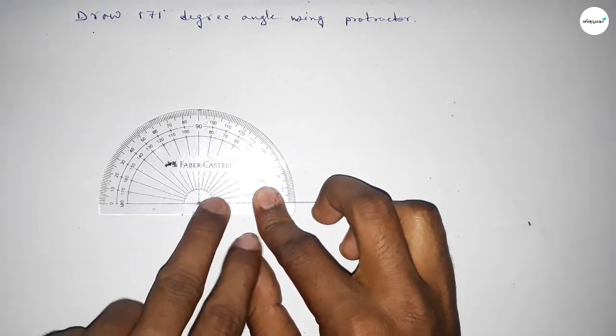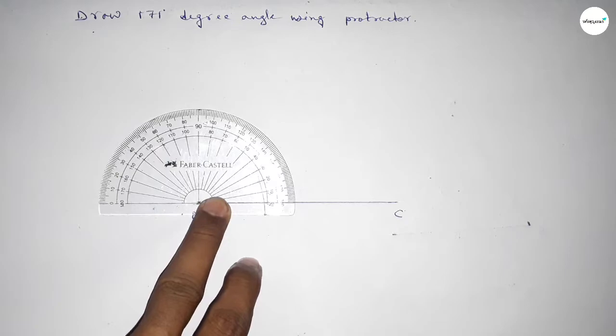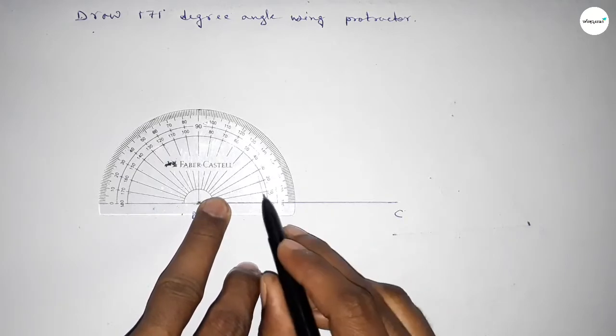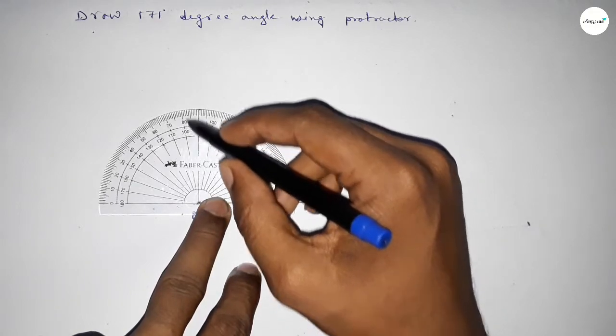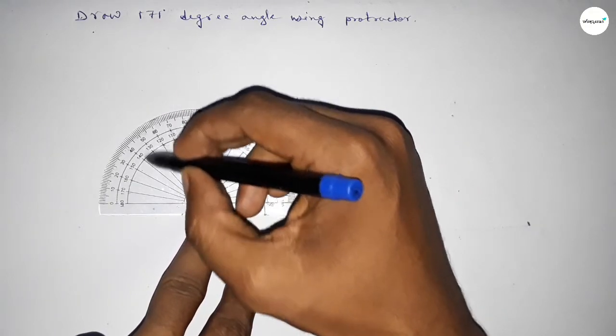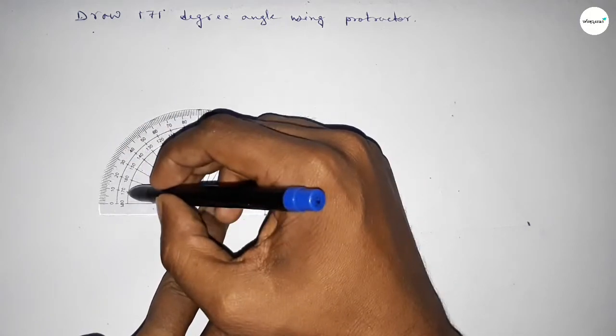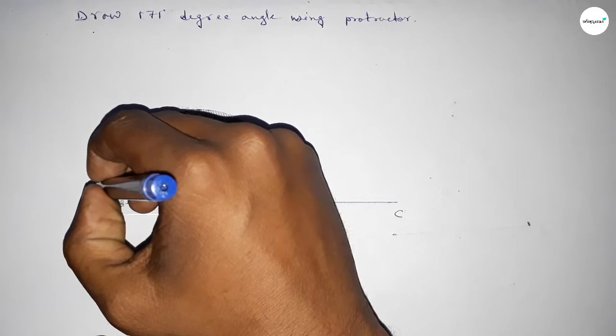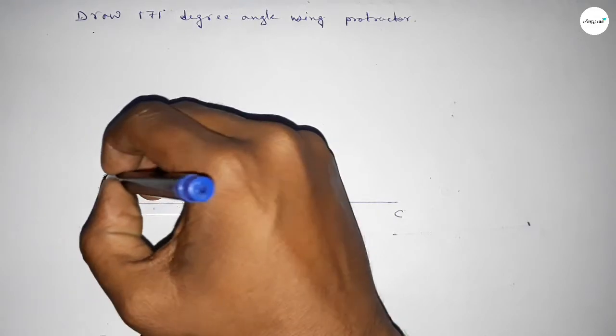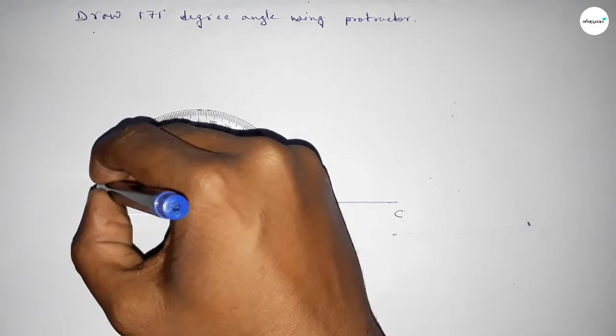Then counting the angles. So this is starting 0, 10, 20, 30, 40, 50, 60, 70, 80, 90, 100, 110, 120, 130, 140, 150, 160, 170, and this is 171. So this is 171 degrees.